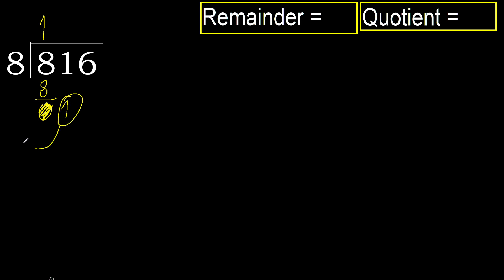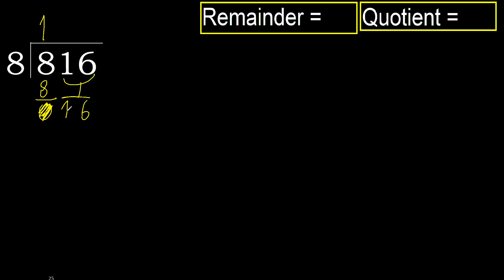1. 1 is less, therefore next. 2 numbers, therefore complete. Always complete with 0. Complete because here 2 numbers.